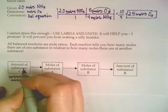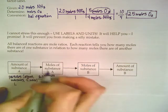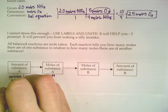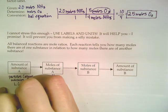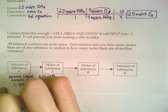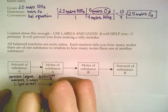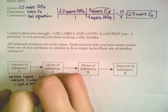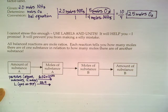Well, what if the amount that they gave you was in liters? Well, assuming that it's a gas at STP, no tricks. If it is, you would need the number 22.4 to get you from here to here.